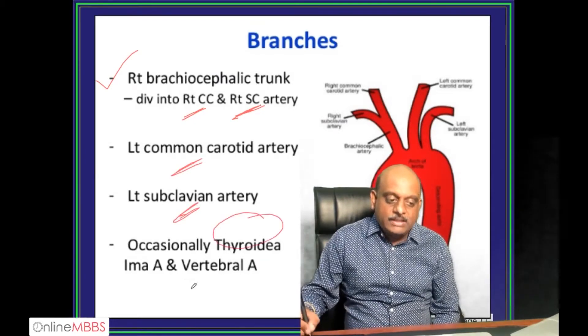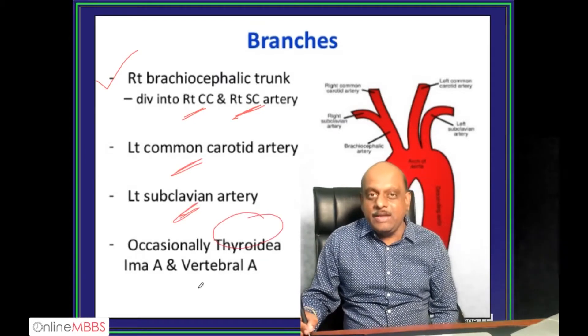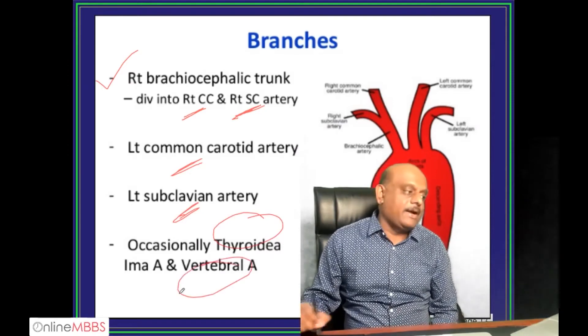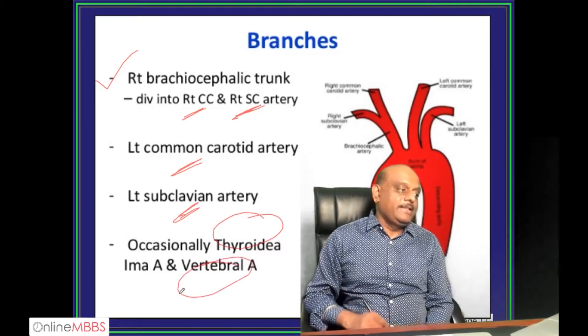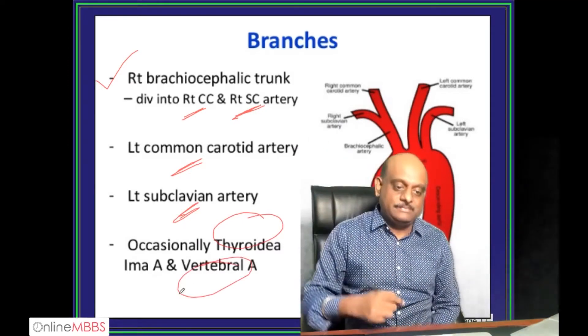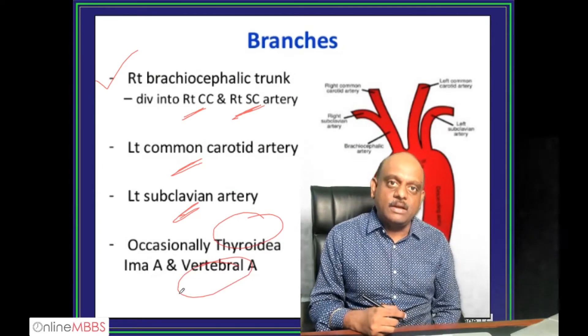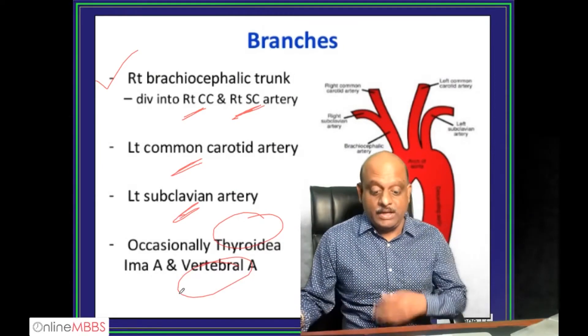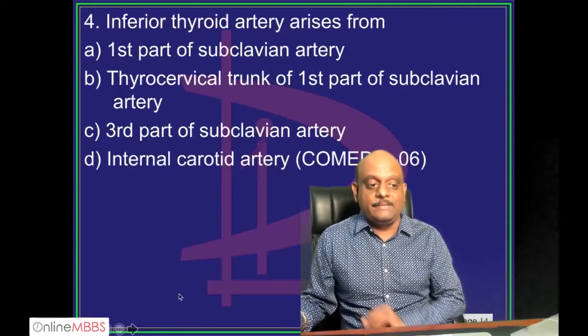Occasionally, thyroidea ima artery and vertebral artery may also arise from the arch of aorta directly.